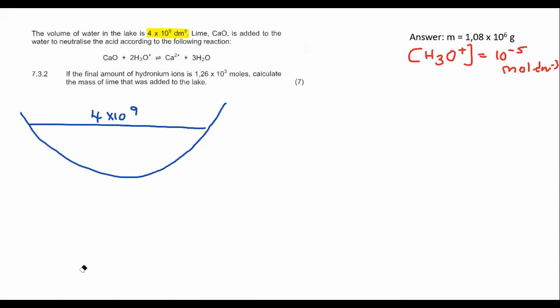So what they're going to do is they're going to throw in a little bit of base. Lime is a base. And they're going to add it into the water in order to neutralize all the acid. The acid can be the hydronium, and so this reaction is going to take place. Then it says the final amount of hydronium is 1.26 times 10 to the power of 3. Calculate the mass of lime that was added.